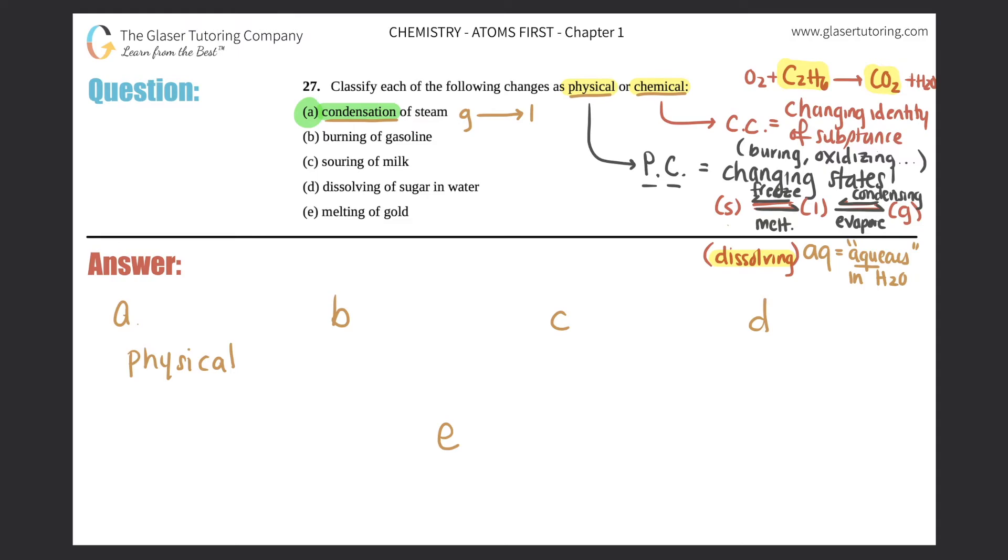Number two, or letter b, burning of gasoline. Burning is not a phase change, burning is an actual reaction. So this, I'll say, changing substance. If you're changing the substance, you're changing gasoline, that's a chemical change. So b would be chemical.